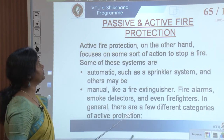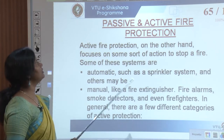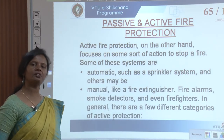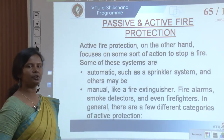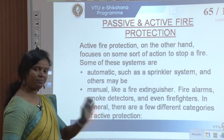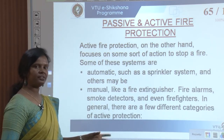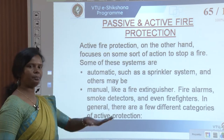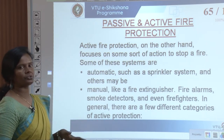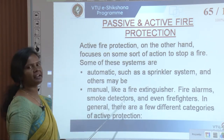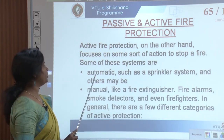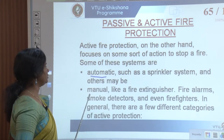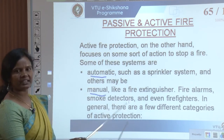Active fire protection, on the other hand, focuses on some sort of action to stop a fire completely. In passive systems it was about containing the fire; in active it is about stopping the fire. These systems can be automatic or manual, such as sprinkler systems.